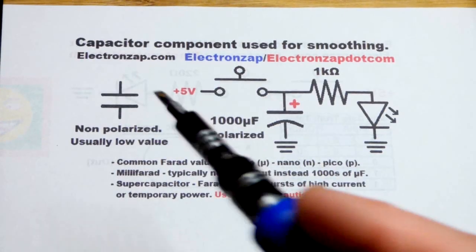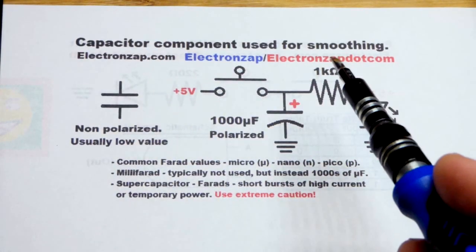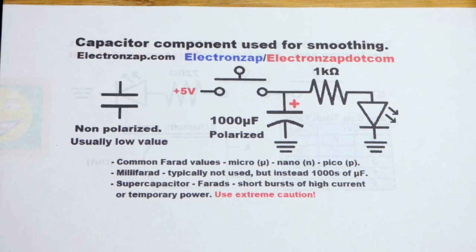So now in this video we're going to introduce the capacitor component. We're going to use it as a smoothing capacitor, one of the common ways that it's used.